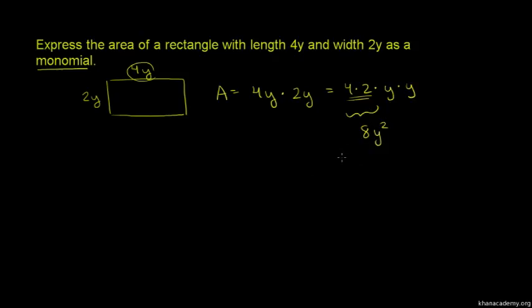Now we have 8y squared. You put it as a monomial.